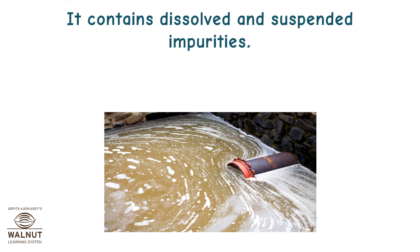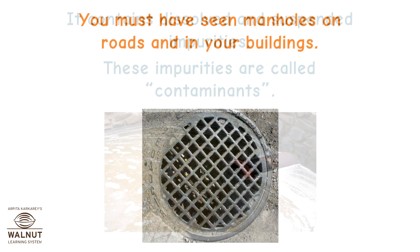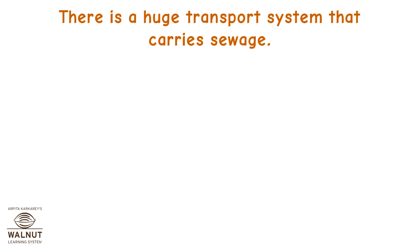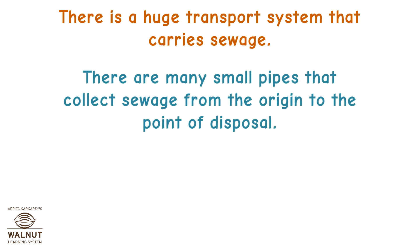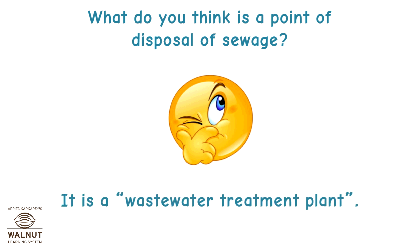Sewage is liquid waste. It contains dissolved and suspended impurities called contaminants. You must have seen manholes on roads and in your buildings — there is a huge transport system that carries sewage. There are many small pipes that collect sewage from the origin to the point of disposal, which is a wastewater treatment plant.